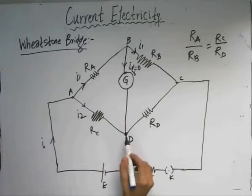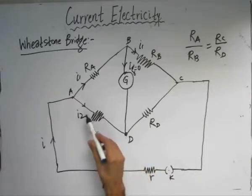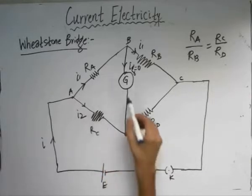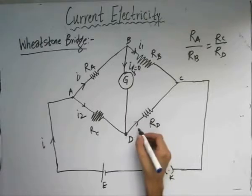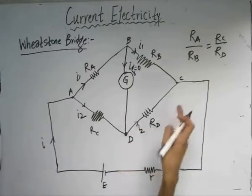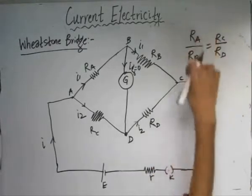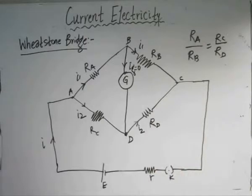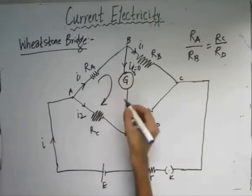Similarly at node D, if we apply KCL, we can see that I2 plus zero — the incoming current must be equal to outgoing current — so this gives us an outgoing current of I2 across branch DC. Now, to prove this relationship, what we can do is apply KVL in these two loops.